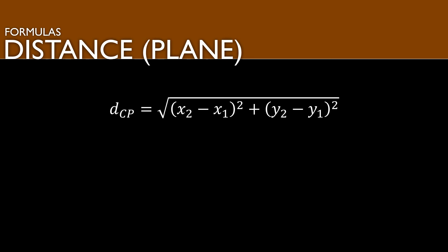Now we find distance on a coordinate plane. There are three ways to do this. The first is the actual distance formula — probably the most complicated — but important to know: D equals the square root of the quantity x2 minus x1 squared, plus the quantity y2 minus y1 squared. This is the longest method, and you may or may not want to use it.